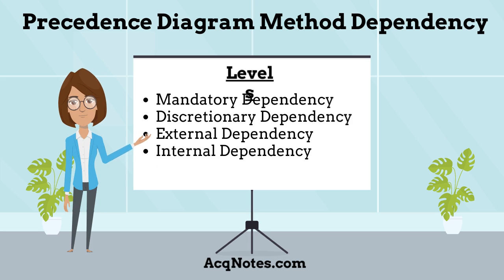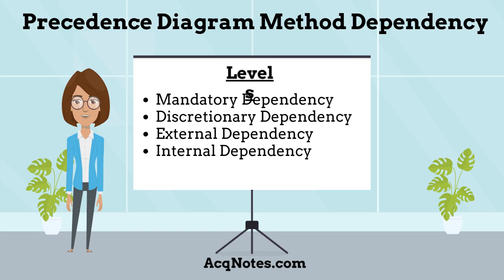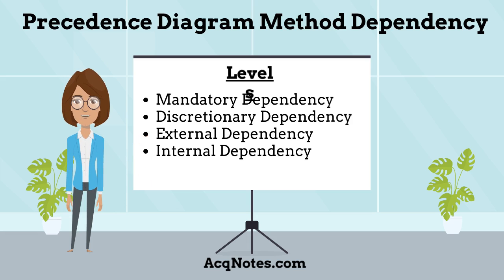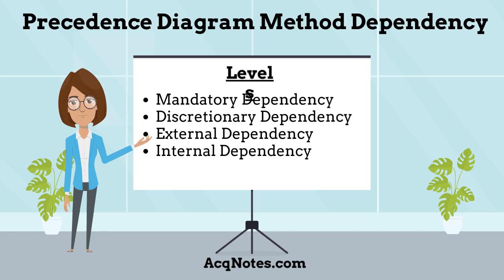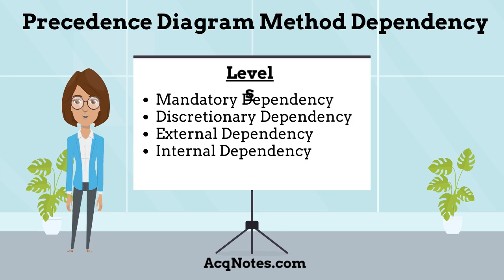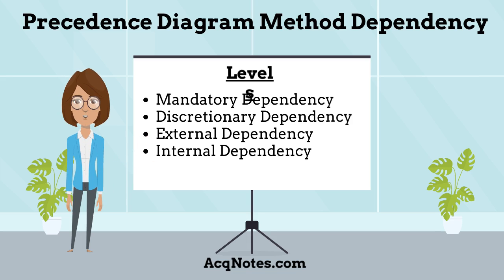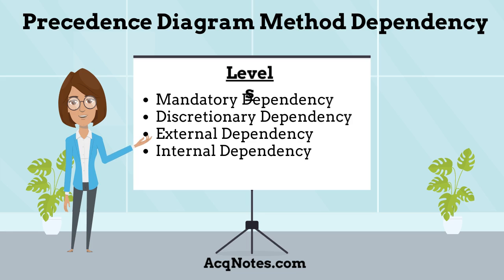The precedence diagram method has dependency levels which are: mandatory dependency, known as hard logic, is an integral part of the work — for example, activity A must be completed before activity B can start. Discretionary dependency, or preferential or soft logic — the dependency is controlled by the project team and can be changed. External dependency comes from outside of the project — for example, laws and regulations, or waiting for government funding to begin the project. And finally, internal dependency involves a precedence relationship between project activities — for example, it cannot start until the previous internal project is completed.